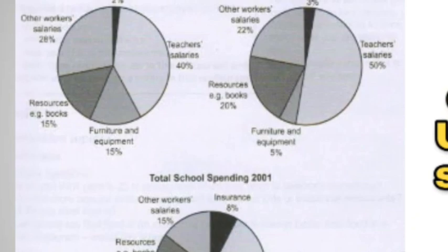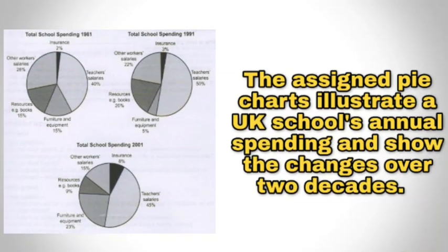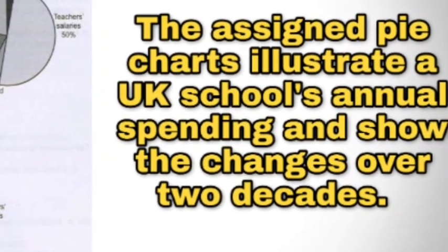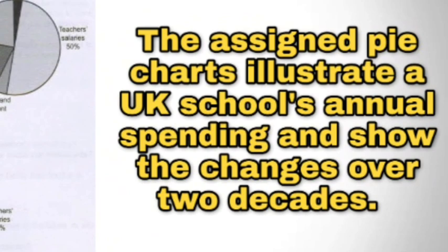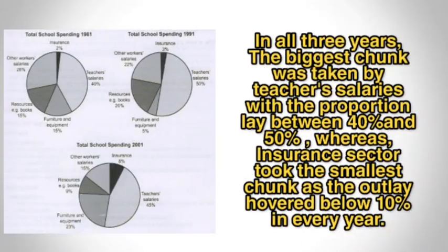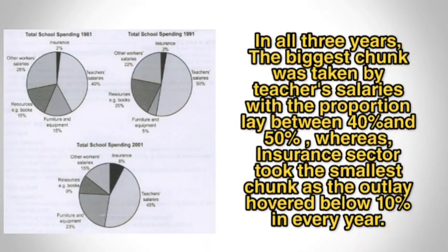We are going to write the introduction first. Here it is: 'The assigned pie charts illustrate a UK school's annual spending and show the changes over two decades.' This is a simple and straightforward introduction that you have to use while writing. Now we are moving towards the body part.